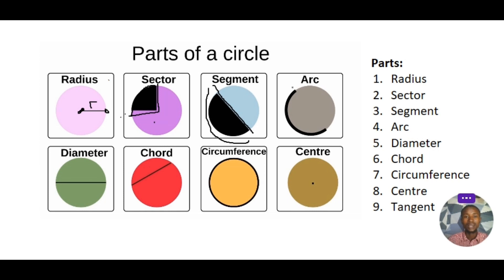So we have an arc. An arc of a circle is a part of the circumference. So we have a part of this circumference, this curved path, is what we refer to as an arc.